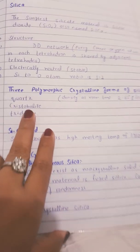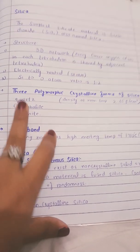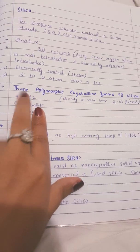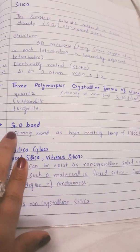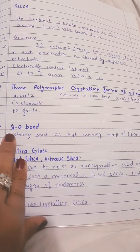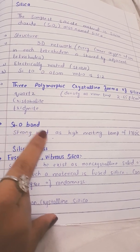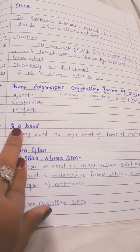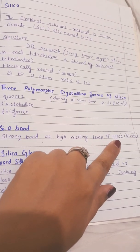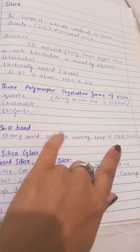Next we will talk about the polymorphic forms of silica: these are quartz, cristobalite, and tridymite. The density of quartz at room temperature is 2.65 g/cm³. The Si–O bond is a strong bond, which is why a high melting point is required — the melting point is 1710°C — indicating the strength of this bond.